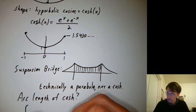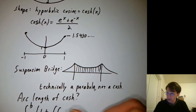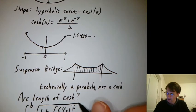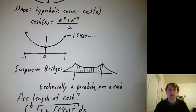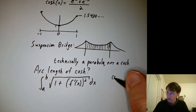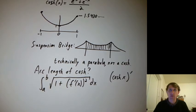Well, our arc length formula is a to b integral of square root of 1 plus f prime of x squared dx. So we're going to need to know the derivative of cosh. What would you guess is the derivative of cosh?